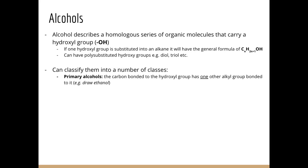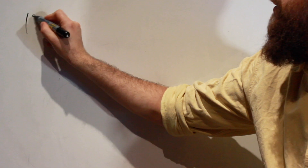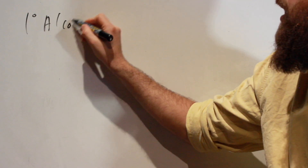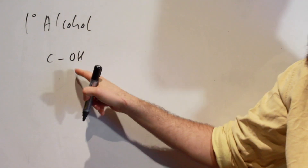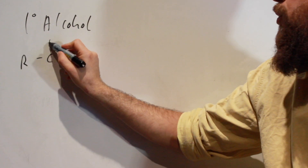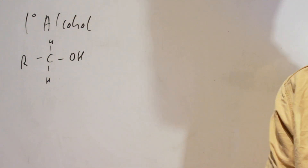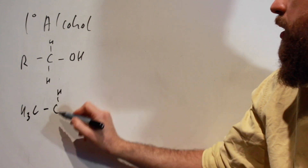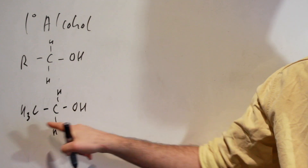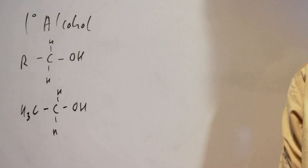We're going to have primary alcohols where the carbon bonded to the hydroxyl group has one other alkyl group bonded to it. For example, ethanol: we have the carbon with the hydroxyl group attached to one other carbon, therefore it's a primary alcohol.